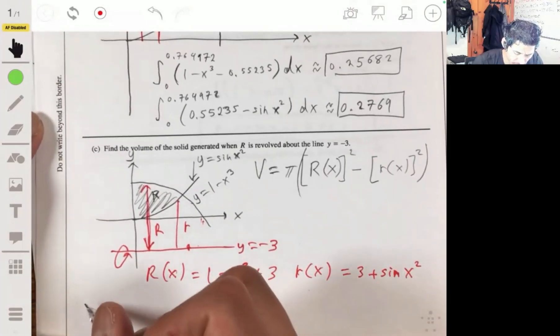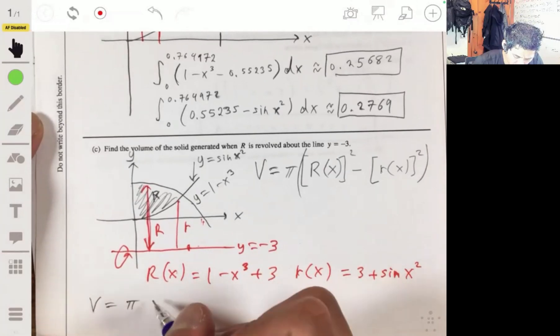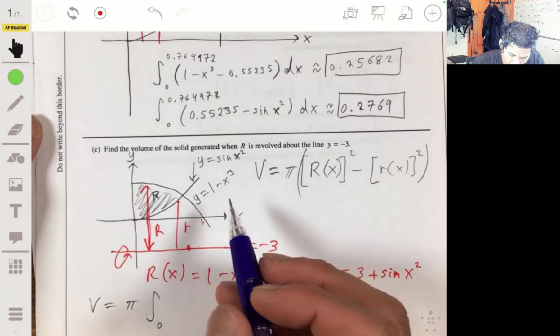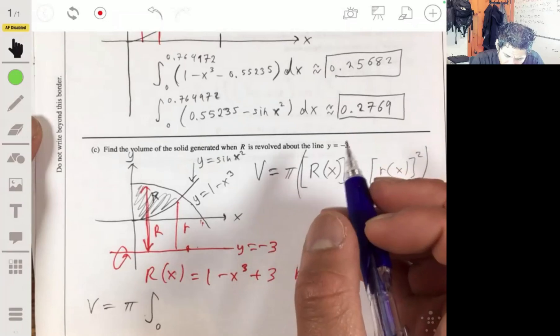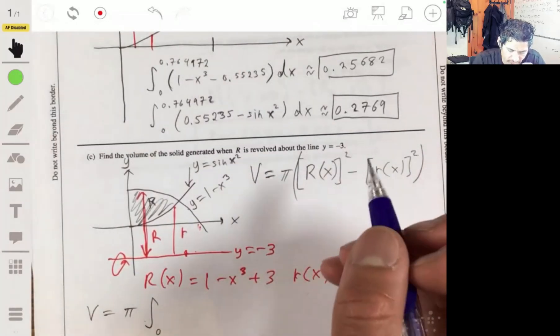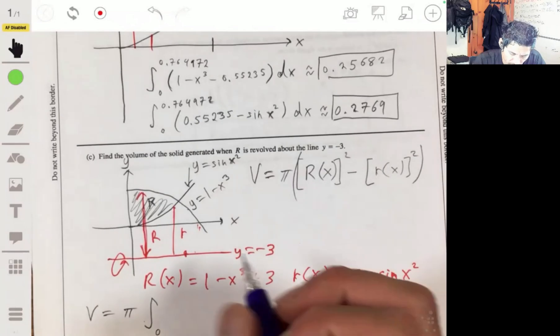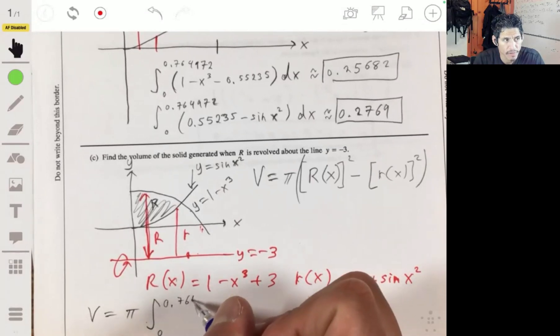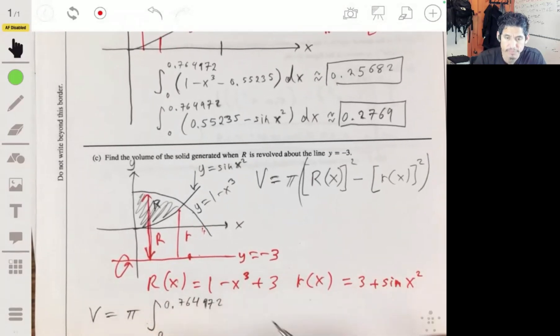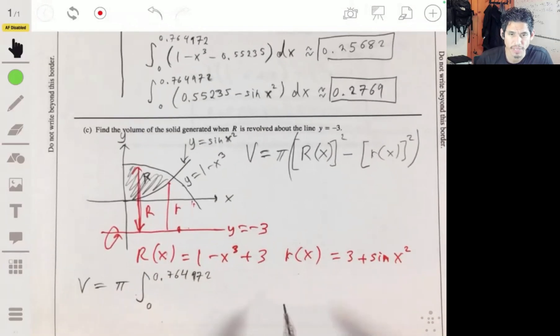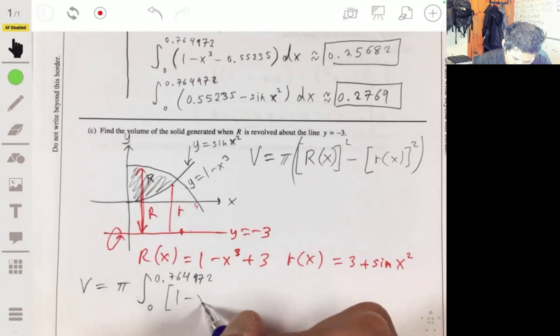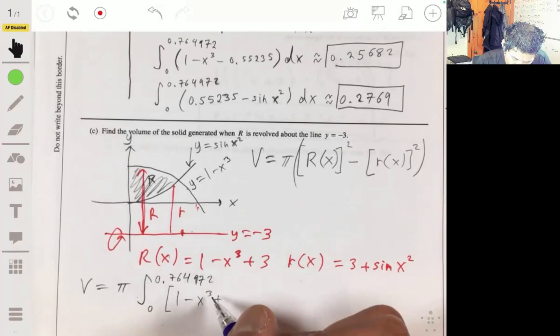And then we just set up our integral in total. The volume is going to be pi times the integral from zero to the point, 0.764972. And then we're going to have the large R of x first. 1 minus x cubed plus 3.